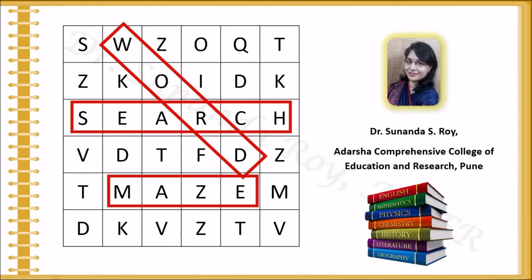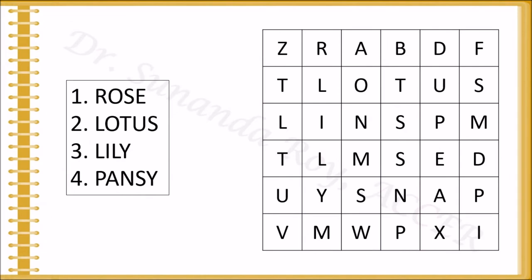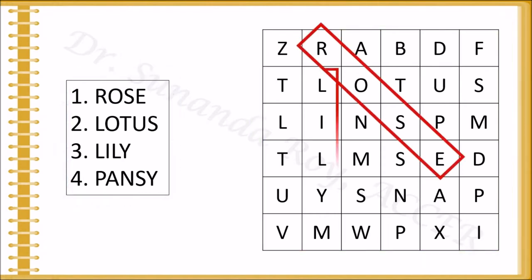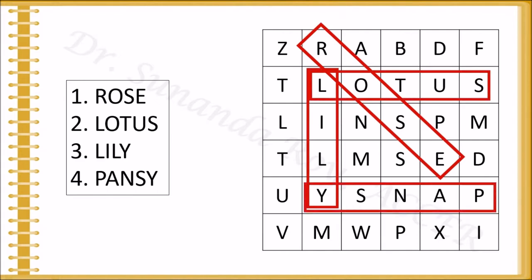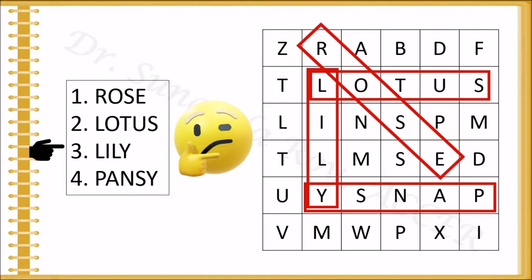So let's get started. I'm Dr. Sunanda Roy. This is what a typical word maze looks like — it has a list of words on the left which students have to find in the word maze on the right. As students get the correct answers, the teacher clicks and frames appear around the words. However, there are two problems: it doesn't look very attractive, and the teacher has to go according to the sequence of the word list. What if a student finds a word out of sequence — for example, Lily first? The animation for the frames follows a fixed sequence, so that becomes difficult.